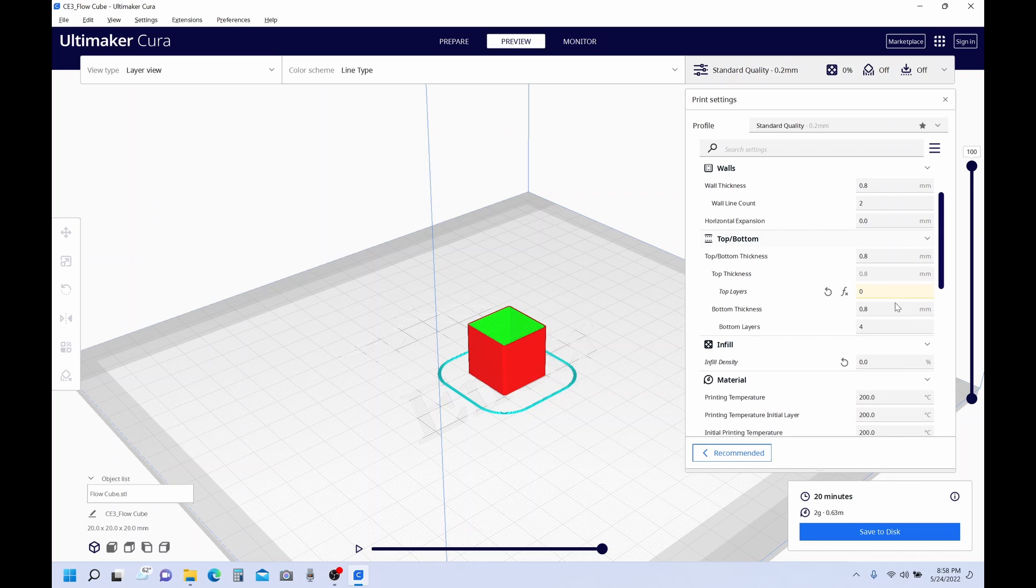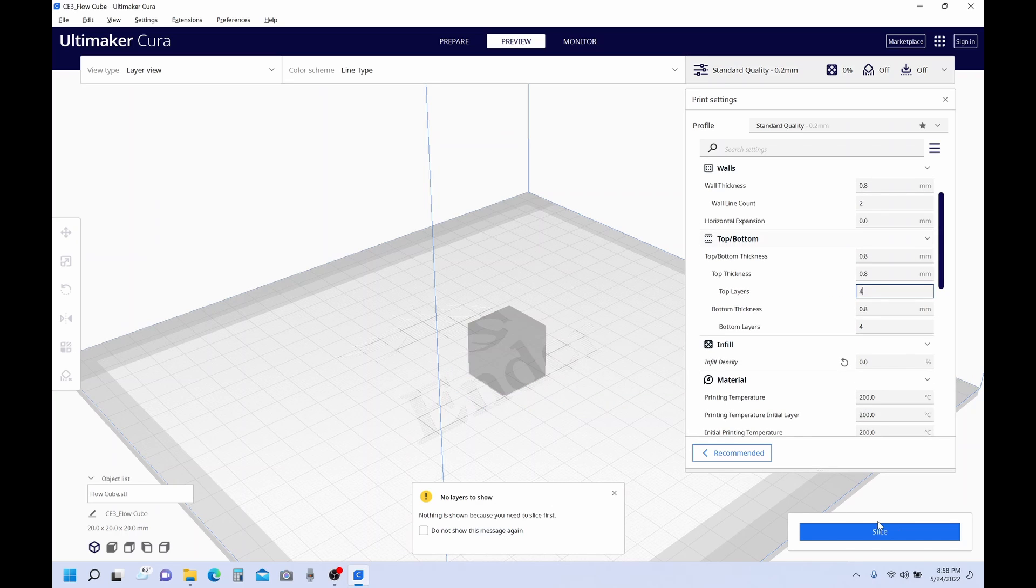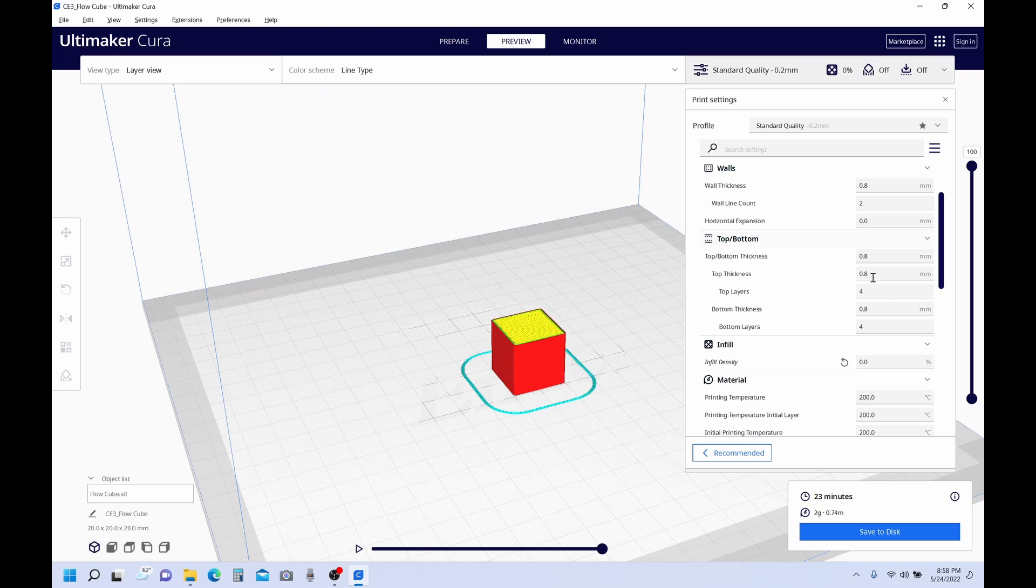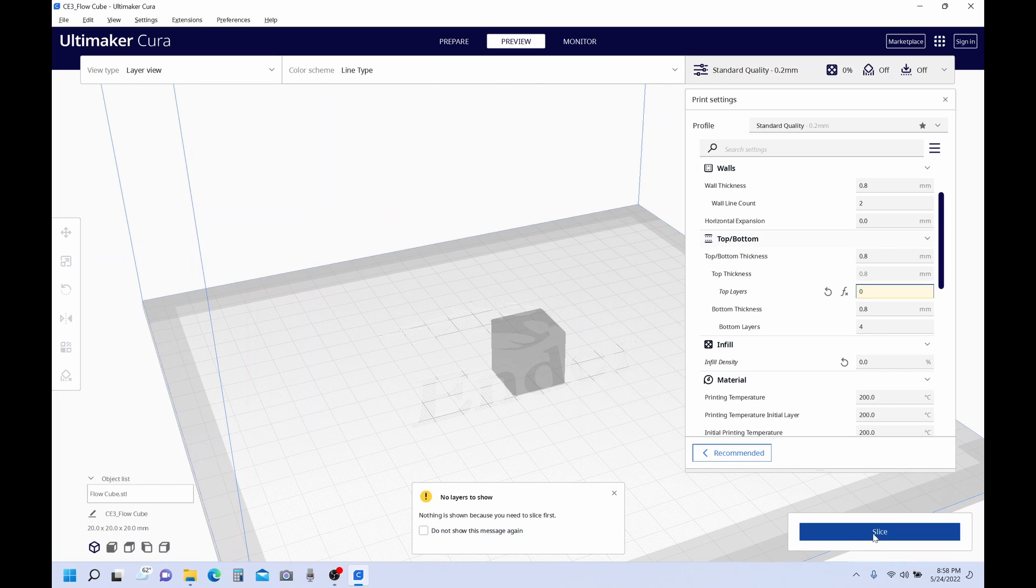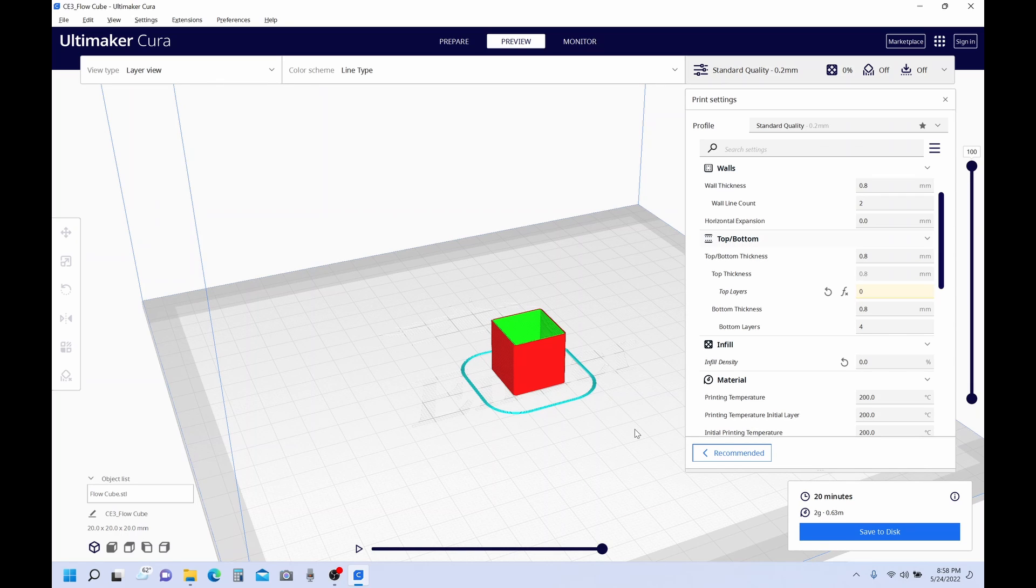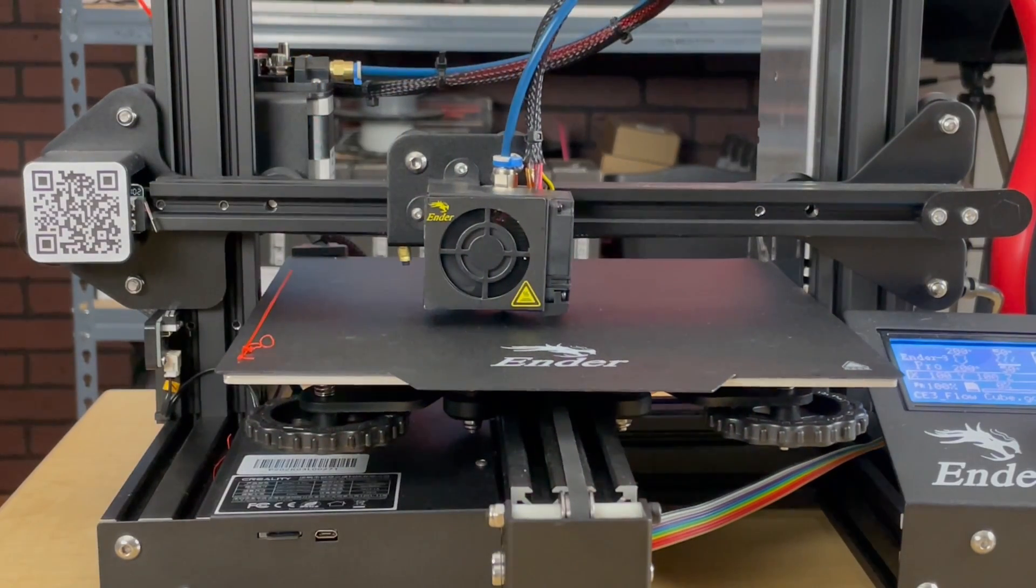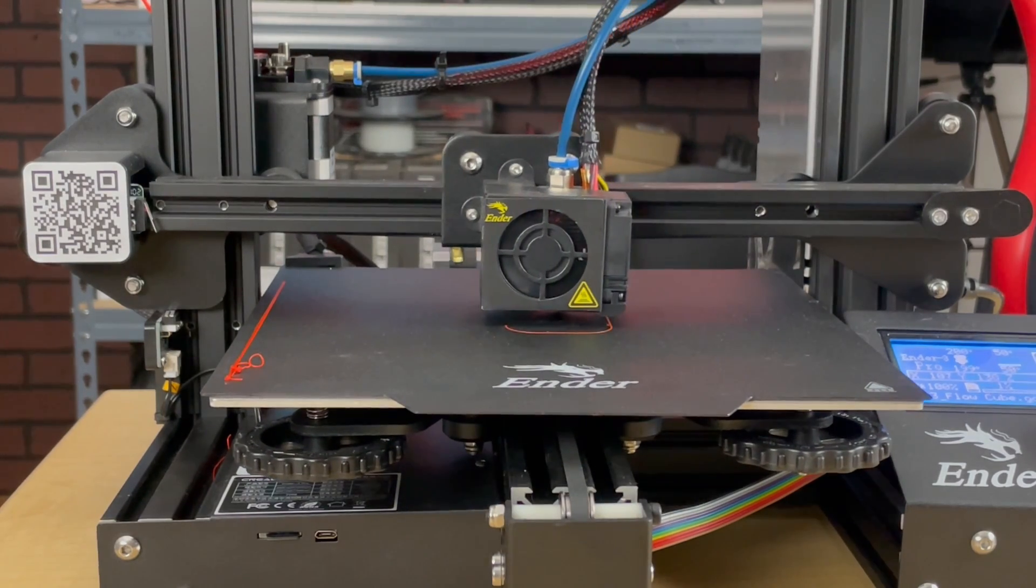If we were to go back and change our top layers back to 4, like it was, and re-slice, there you can see it's got a lid. So let's put that back to zero, re-slice it, and let's print and see what we'll come up with.